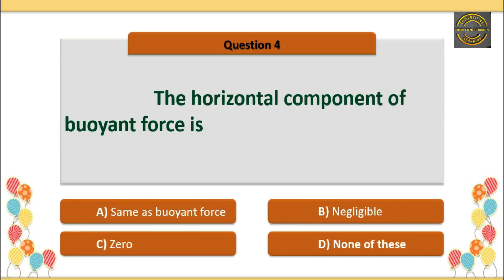Q4: The horizontal component of buoyant force — Option C is correct — 0.